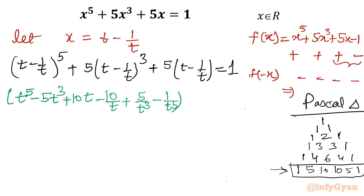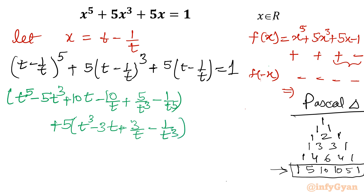For the cubic term, we apply the (a minus b) cubed formula. So t minus 1 over t whole cubed gives: t cubed minus 3t plus 3 over t minus 1 over t cubed. Multiplying by 5 gives 5t cubed minus 15t plus 15 over t minus 5 over t cubed. We also have the term 5 times t minus 1 over t.